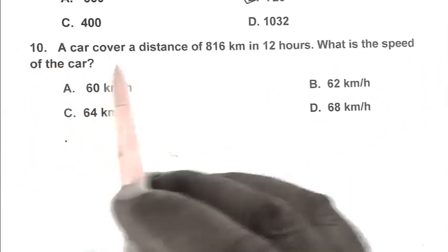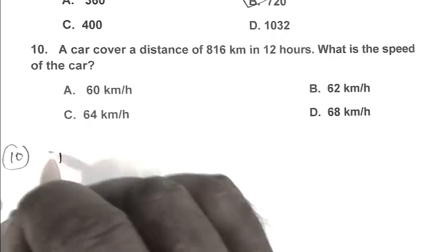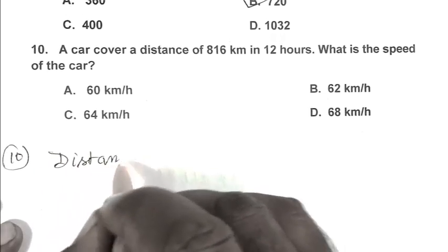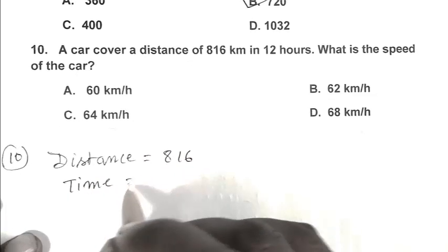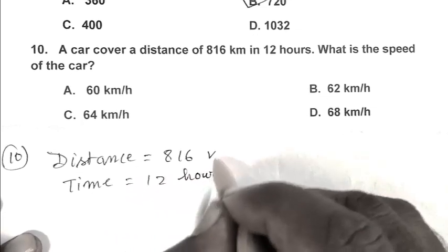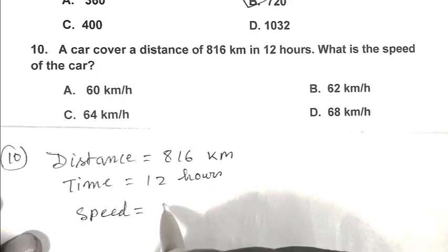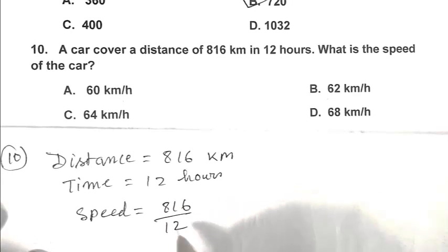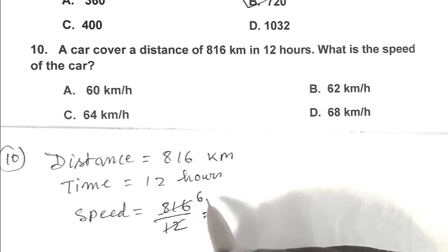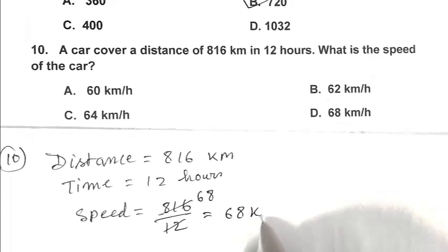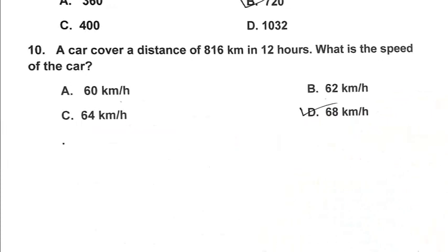Question number 10. A car covers a distance of 816 km in 12 hours. What is the speed of the car? Distance is 816 km, time is 12 hours. Speed equals 816 upon 12, that is 68 km per hour. So D is the right answer.